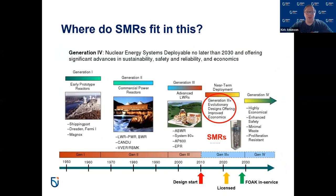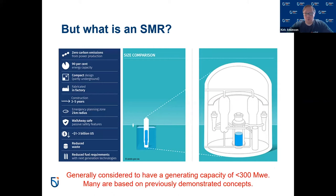SMRs fit in this near-term deployment generation three-plus and generation four world. It roughly takes about 10 years to go from design through to maybe a license — and here in Canada we don't have anything completely licensed yet. So what exactly is an SMR? The idea is that it's simply a small reactor. Small reactors take up a lot less space, have fewer parts, and typically make less power — less than 300 megawatts electrical. Many are based on previously demonstrated concepts.